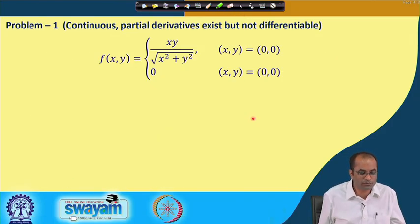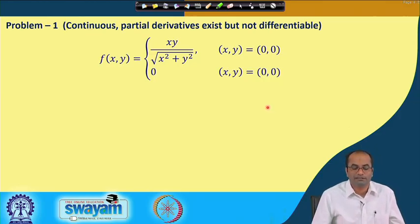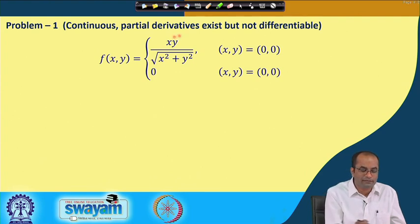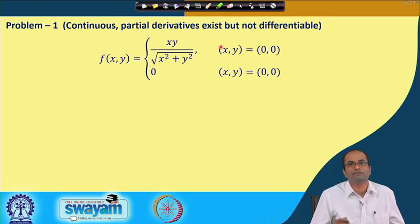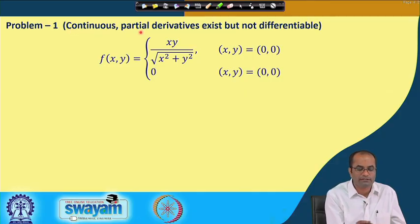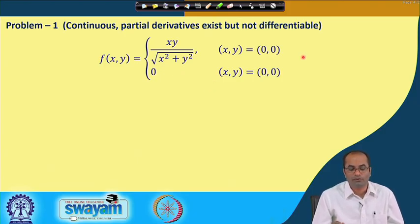In Problem 1, we will show that the function is continuous and its partial derivatives exist, but the function is not differentiable. This illustrates that continuity and existence of partial derivatives are only necessary conditions for differentiability — we cannot claim differentiability based on these two conditions alone.